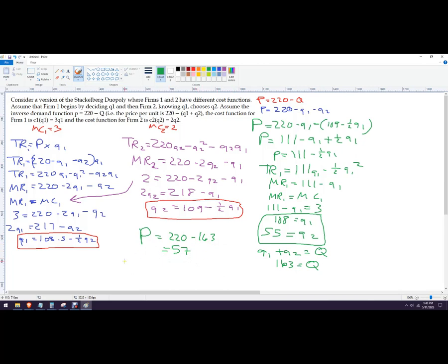So if you wanted to get profit, this question doesn't ask that, but just in case you did, if you were comparing this to like a monopoly or something else, profit for firm 1 is going to be price, so price is 57, times their quantity, 108, and then minus the marginal cost, which is 3, times 108. And whatever that is, that's a positive number, they're going to make profit. It looks like 54 times 108.